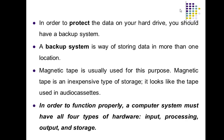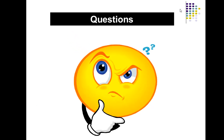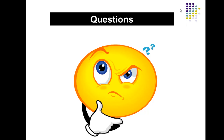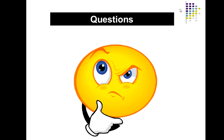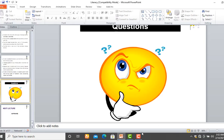In order to function properly, a computer system must have all four types of hardware: the input, processor, storage, and output device. If you have any questions, you can type in the YouTube comments and I'll respond to you. Thank you for being with us. Next we are going to discuss ergonomics in computers on YouTube. Thank you so much.